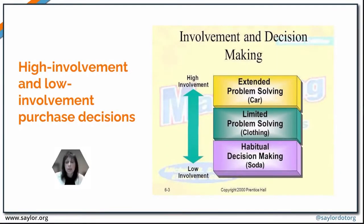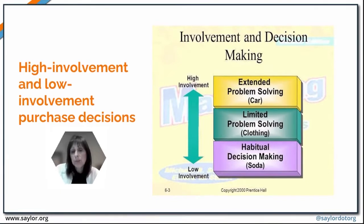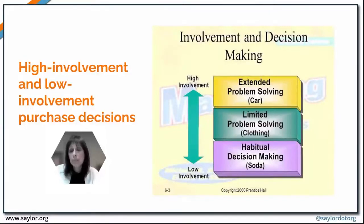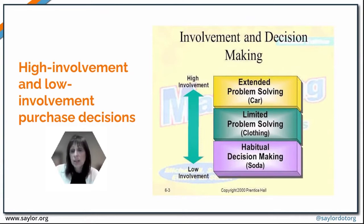An example of habitual low-involvement purchasing is something like soda or soft drinks. Limited problem-solving, kind of in the middle, might refer to clothing. Extended problem-solving might apply to buying a car if you don't purchase one very often, recognizing that the risk of making a bad decision is fairly high because it's an expensive purchase.